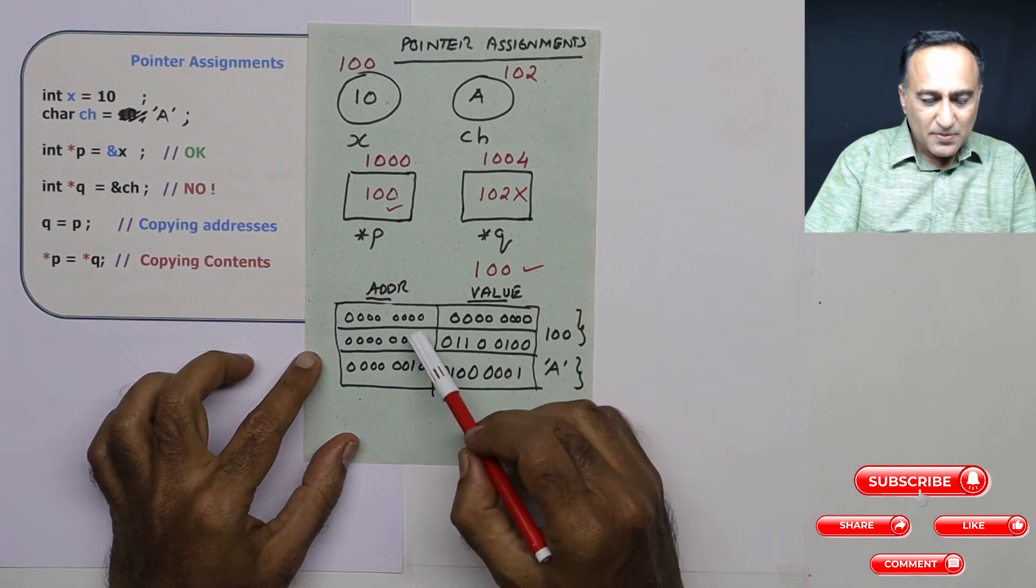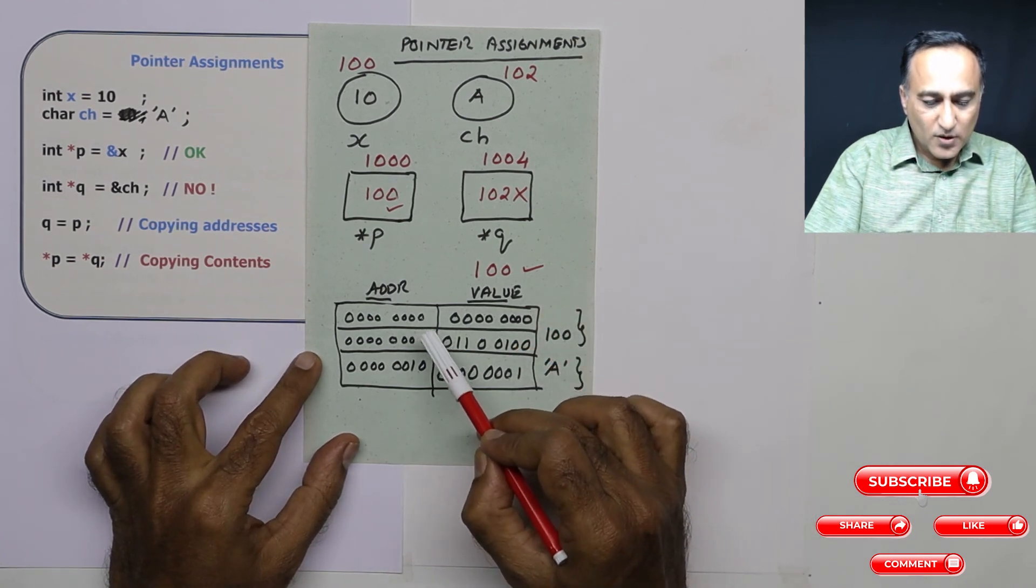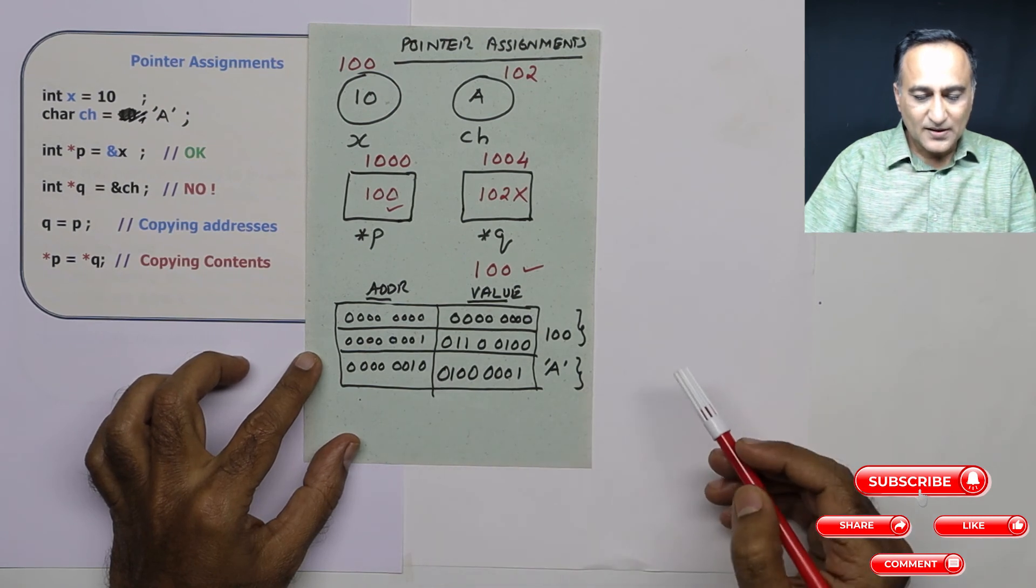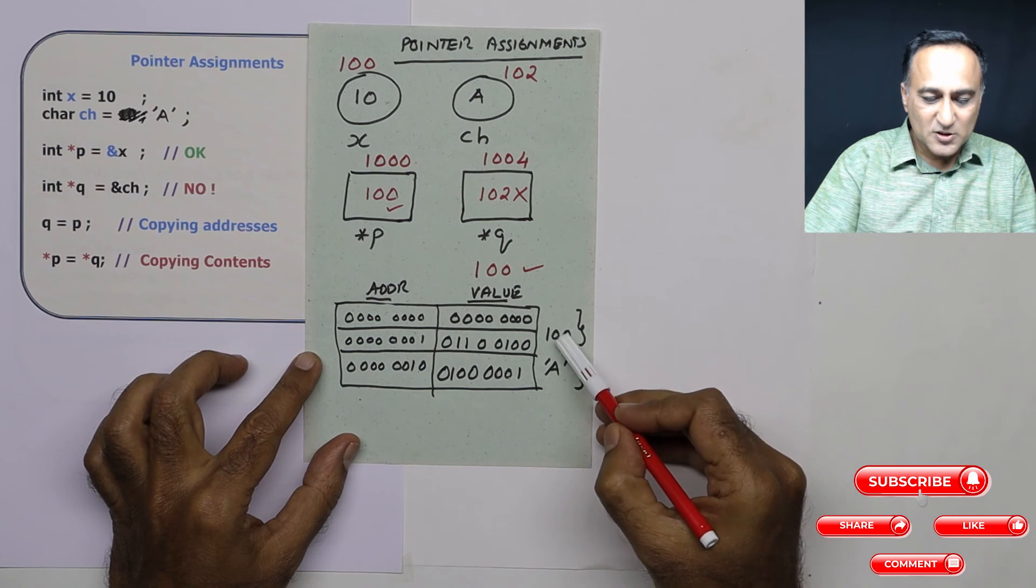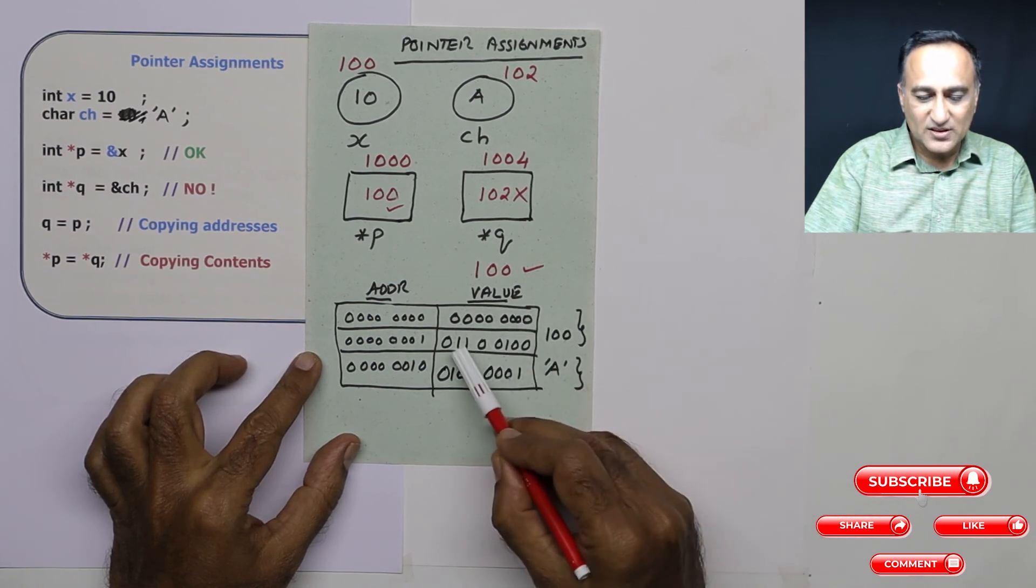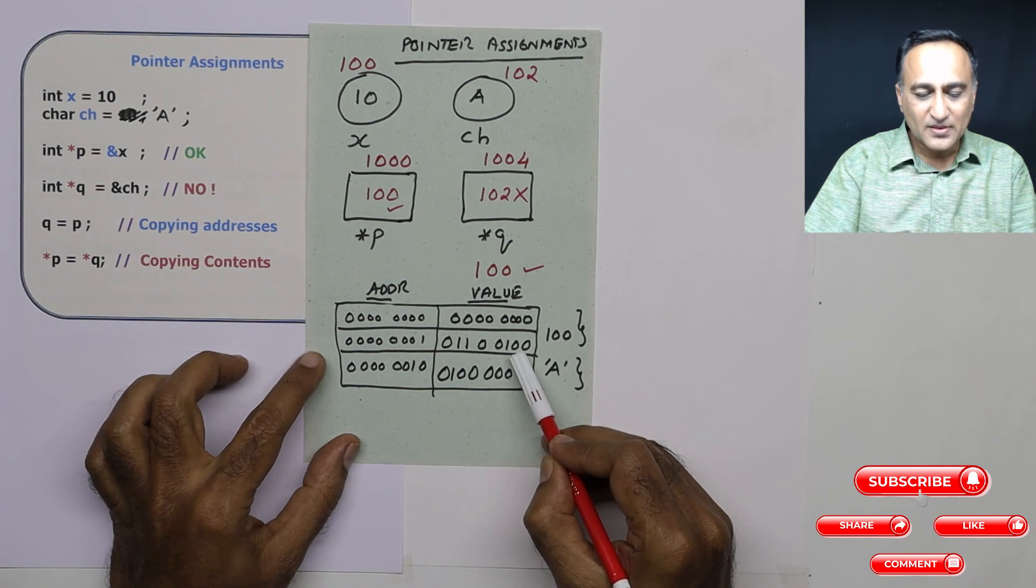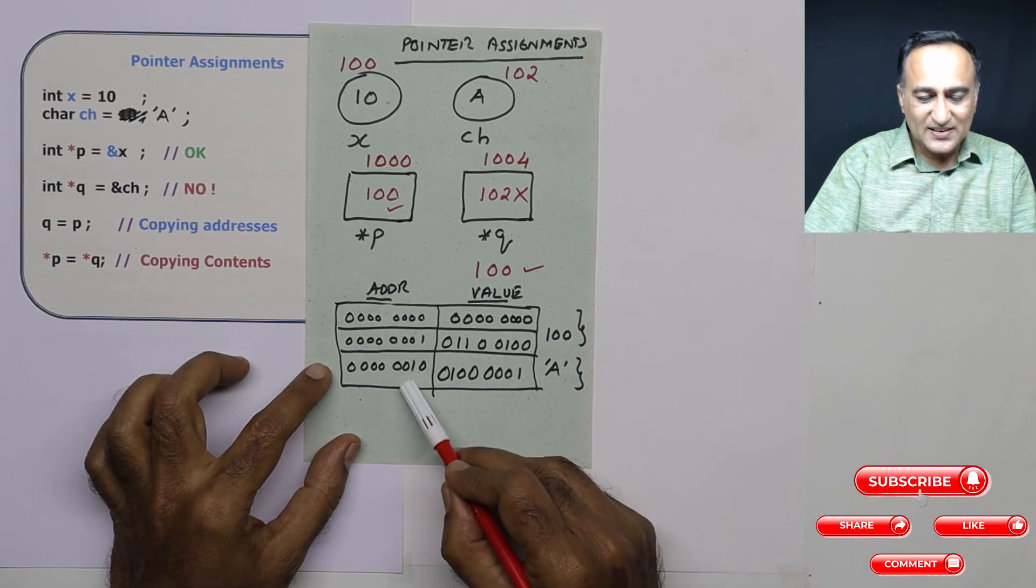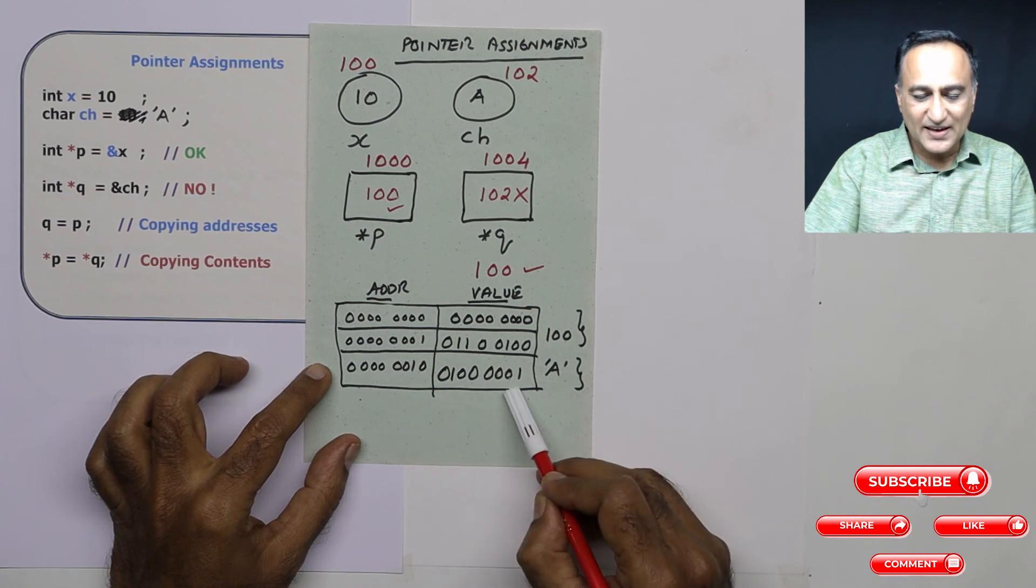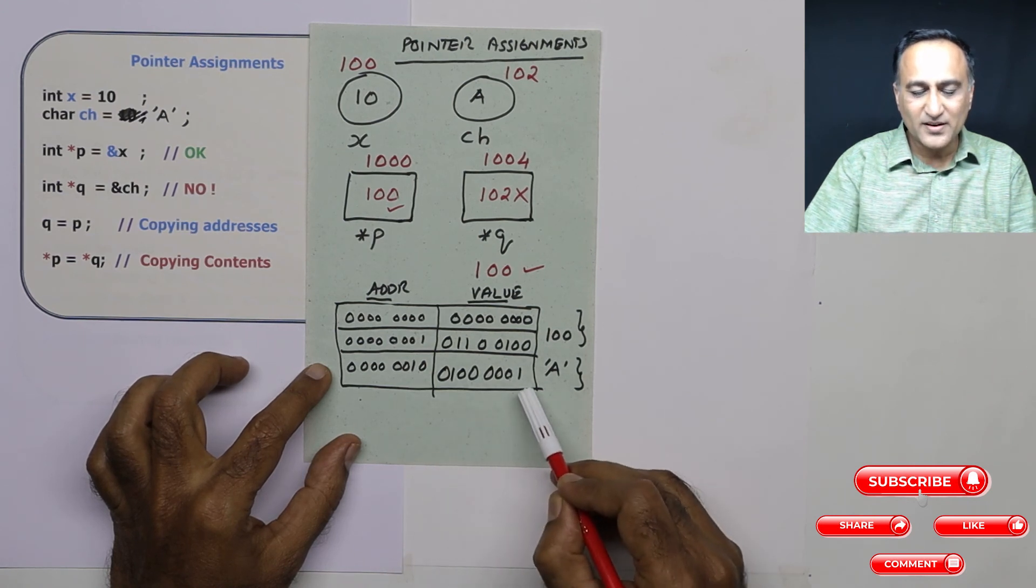Now I will help you understand why you cannot assign star q equal to address of ch. Let us think in our memory we are starting from address 0. This is 0th byte, first byte, and second byte. Now let us say in the 0th and first byte I am storing 100. So this is lower, all bits are zeros, this is 100 in binary. Now this is at the second address location, I am storing the character a, this is the ASCII value of character a, 65.